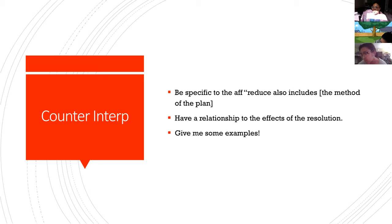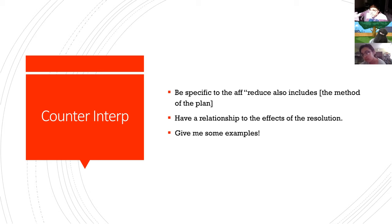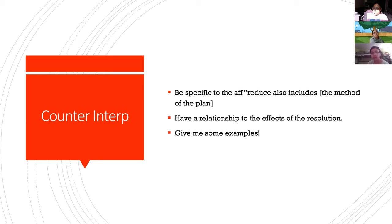A lot of the offense parts will come when you start getting into dis-ads — these are like the impact terms to framework. The counter interpretation is simply saying: all right, we hear you, but here's a better way to do it that's good for you and for me. The negative in the 2NC is going to say that the counter interpretation stuff still links to their offense — i.e., why not abiding by the interpretation is bad for the negative and the debate. But that's a debate you will take up. There's never an argument that just beats and wins — you have to be persuasive, take a part of concessions, and be strategic.